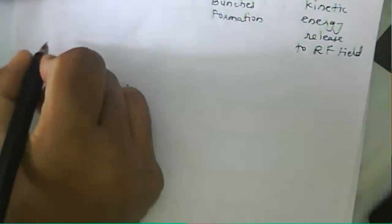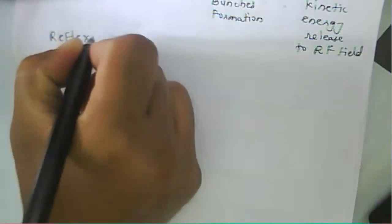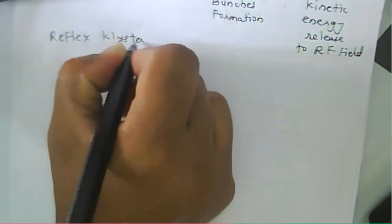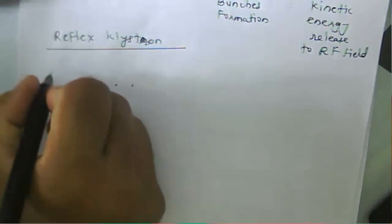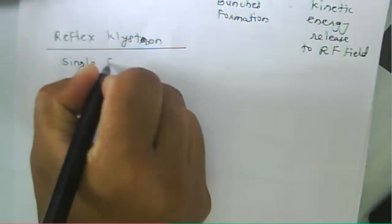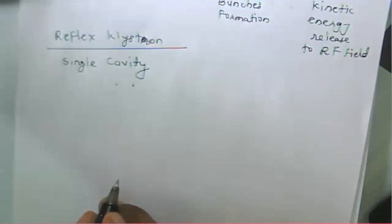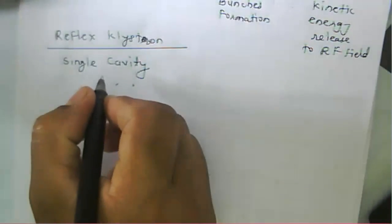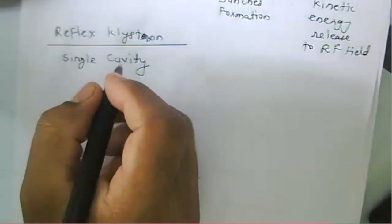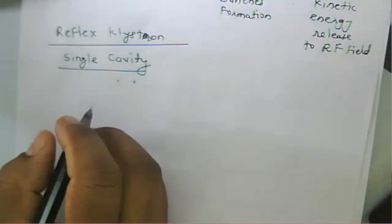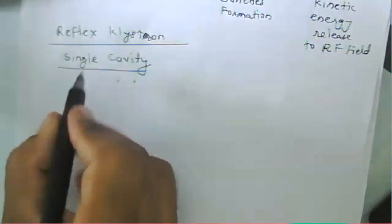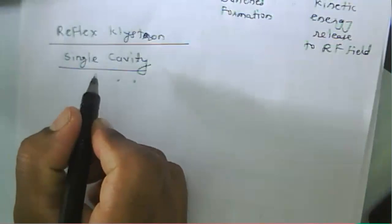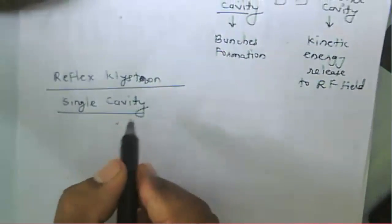Now we need to learn about a reflex klystron. The difference in a reflex klystron is that it doesn't have two cavities — it has a single cavity. That single cavity is used to form the bunches, and again it is used to catch the signal. So the single cavity is used for both operations: bunches formation as well as catching the signal.